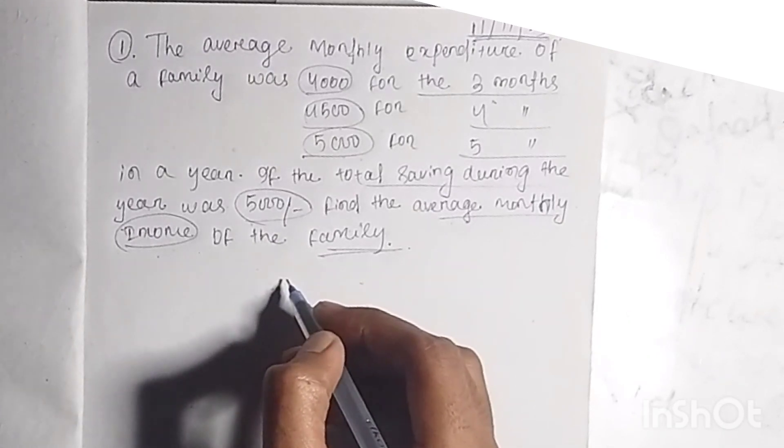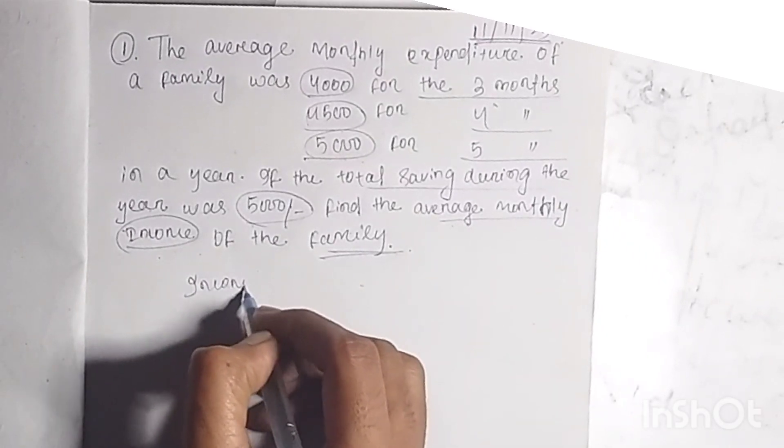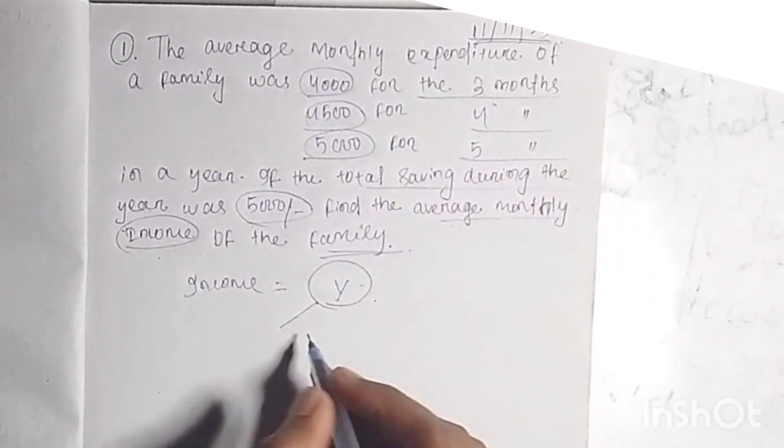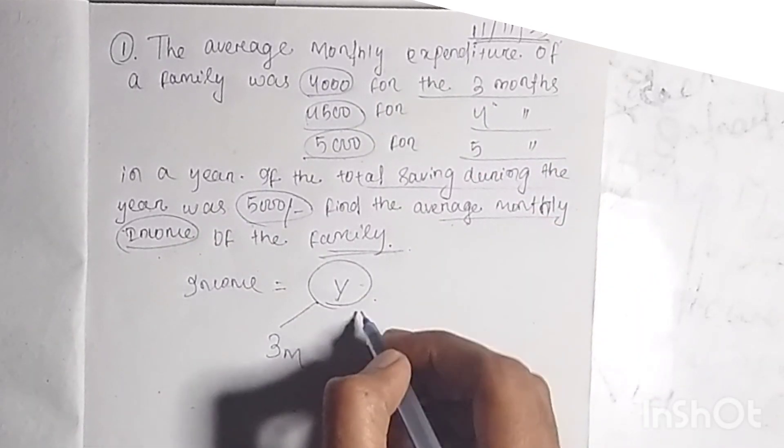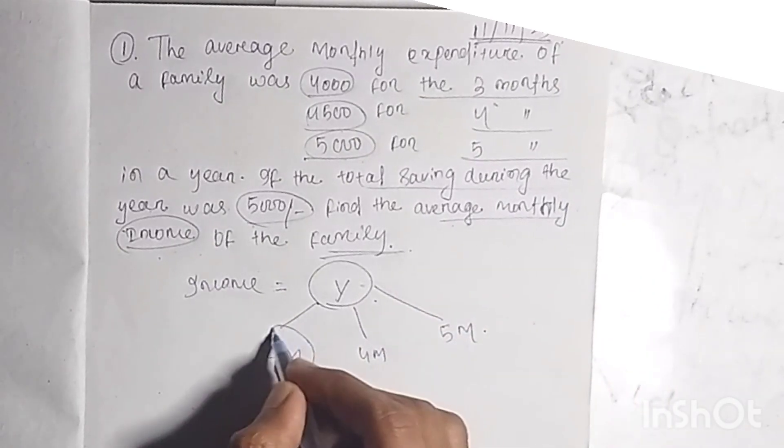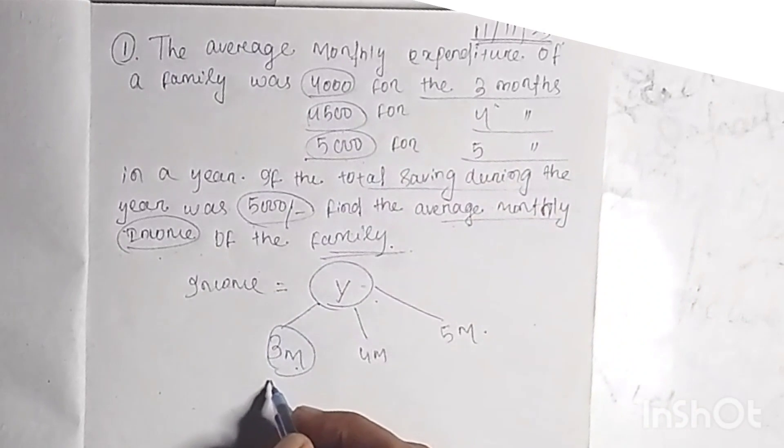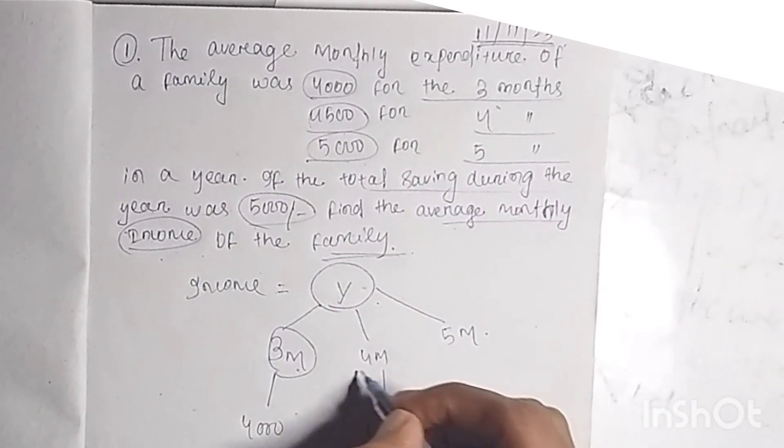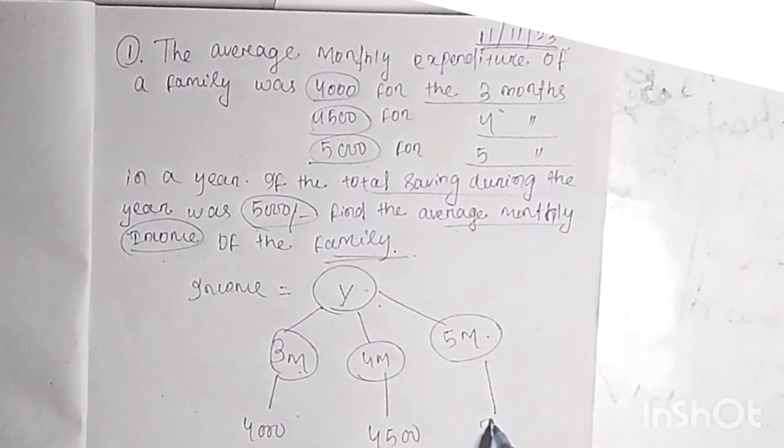We have to find the income of the family. Let's say income is y. So, we have 4,000 for three months, 4,500 for four months, and 5,000 for five months.